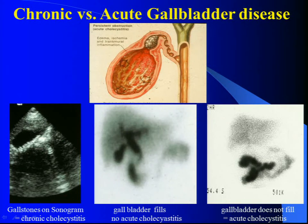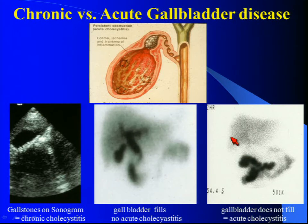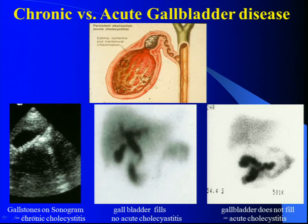Here's another example — gallbladder disease. There are supposedly 20 to 25 million Americans walking around with gallstones. That's called chronic gallbladder disease, or chronic cholecystitis. What you're seeing on the left is an ultrasound exam, which shows these white things — those are gallstones. That's how one diagnoses chronic cholecystitis, in patients who may have fatty food intolerance.